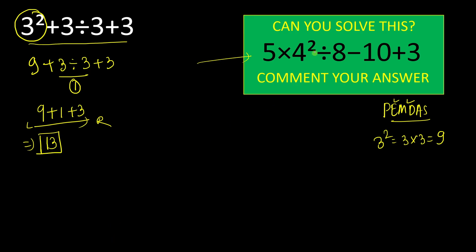So again, first preference will be given to this exponent which is 4². And 4² is 4 times 4, which equals 16. So we will simply write 5 × 16 ÷ 8 - 10 + 3.